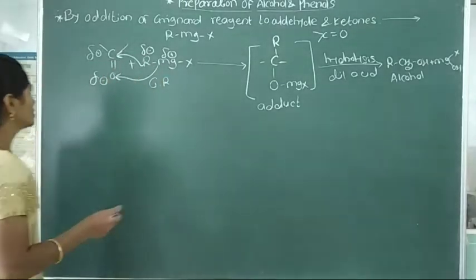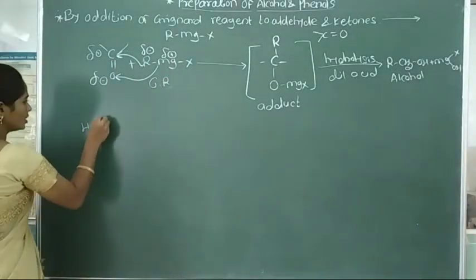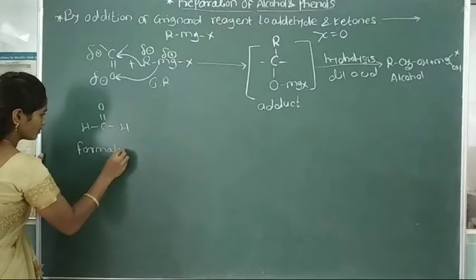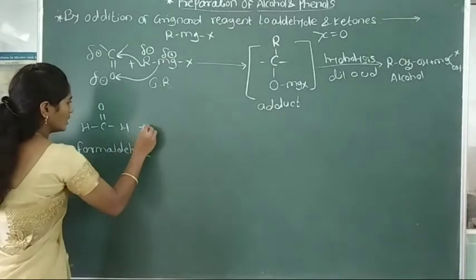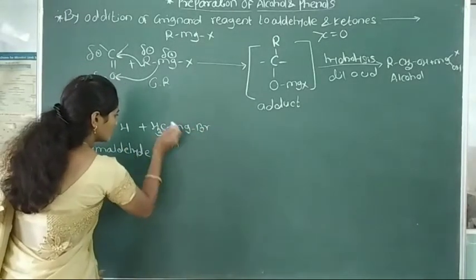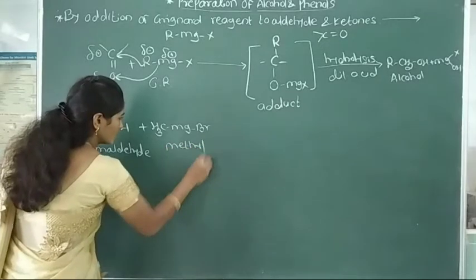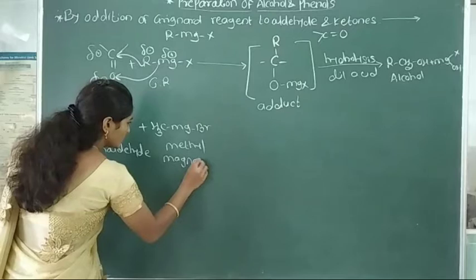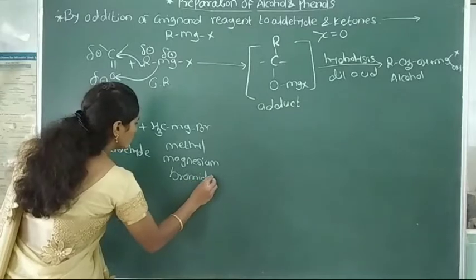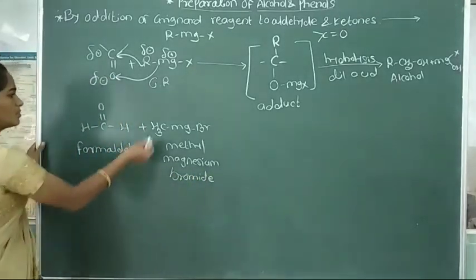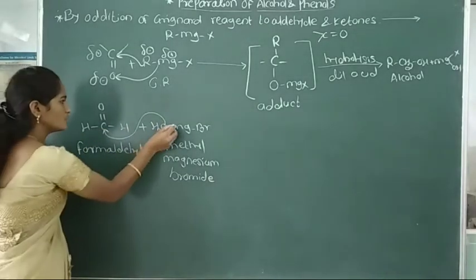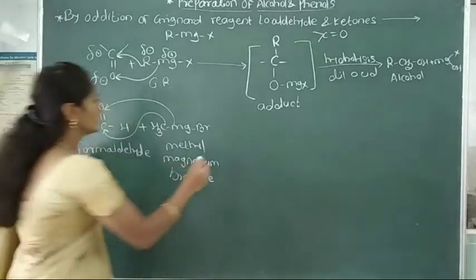For example, suppose we take formaldehyde, HCHO. This formaldehyde reacts with CH3MgBr, methylmagnesium bromide. This methylmagnesium bromide is added into formaldehyde. The methyl group adds into the carbonyl carbon and MgBr adds into the oxygen atom, giving formation of an adduct.